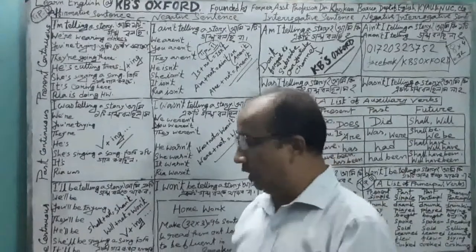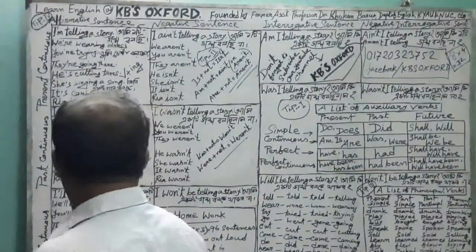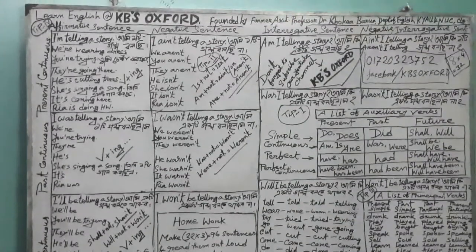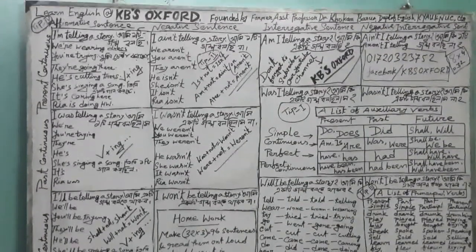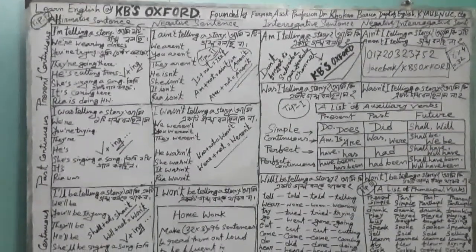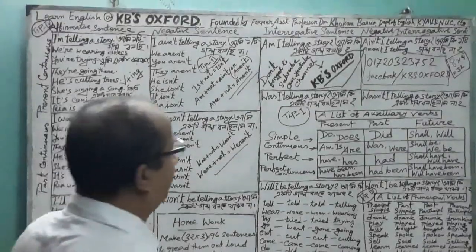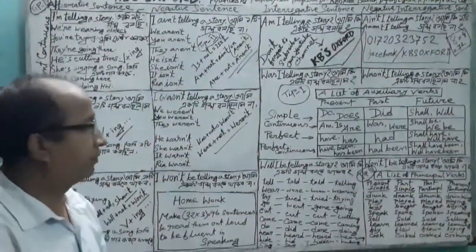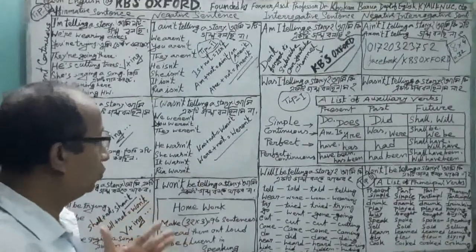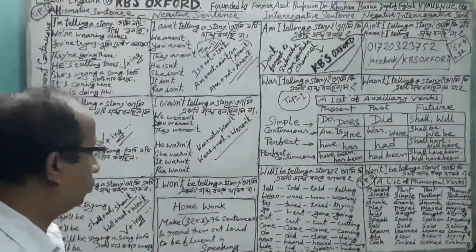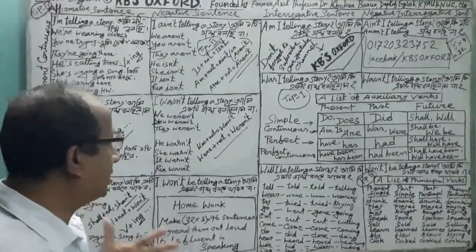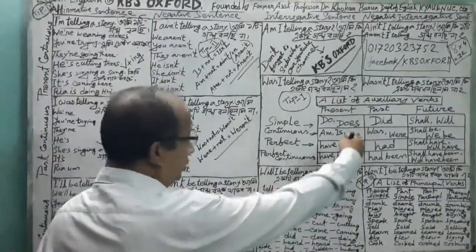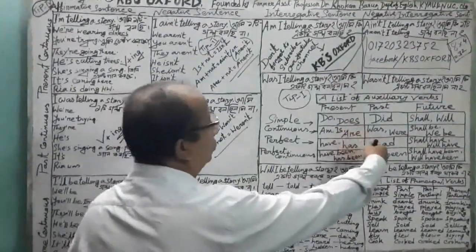Let us start our today's lecture. It is about continuous pattern. Tense is of three kinds mainly, and each tense has four aspects. So there are twelve aspects of tense — we can say twelve kinds of aspects. And in this table, there are twelve subsidiaries.